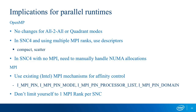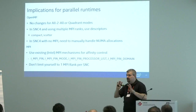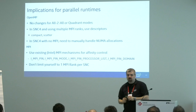For OpenMP programmers: with all-to-all, there's no change — it appears as one single NUMA domain, easy. With SNC4, you see four different NUMA domains, so you need first-touch optimizations, or couple OpenMP and MPI so MPI ranks are scattered across NUMA domains and OpenMP threads are bound within a NUMA domain.